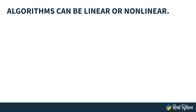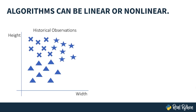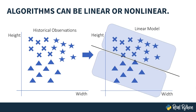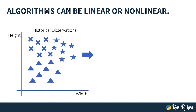Machine learning algorithms can be linear or non-linear. Linear models make predictions that follow lines or hyperplanes, whereas non-linear models do not. For example, say you have classification data where height and width are your input variables and you're trying to predict if the target is a triangle, cross, or star. If you build a linear model, you could end up with a line that divides the input space into triangles versus non-triangles — every point below the line predicted as a triangle, every point above as a non-triangle.